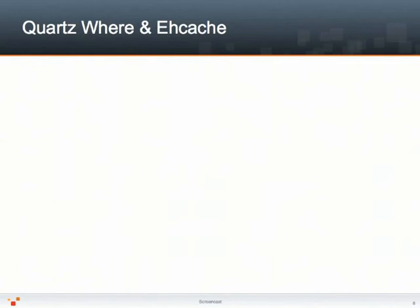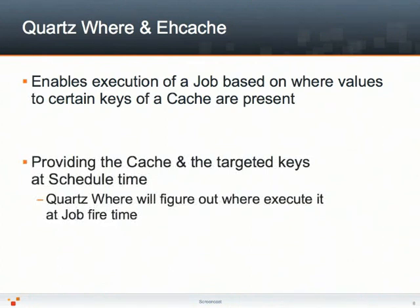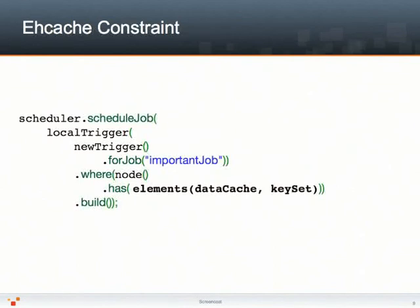Quartzware also comes with an EhCache integration constraint that enables you to decide where the job needs to be executed depending on where values to certain keys are local. That means whenever you're registering a trigger or a job which has EhCache constraints attached, all you need to do is provide a cache and the target keys that you would want the job to work on. Quartzware will then figure out what is the node that has the most values to those keys local and dispatch the job to that node. Here is an example — we're registering a new trigger for the important job again, but this time we would want the node to have the most elements of the data cache already local. The keyset contains the keys that we would need to work on. Let's say we have three keys in there, but we only have one node that has two of these keys local. This is the node that Quartzware is going to dispatch the work to.